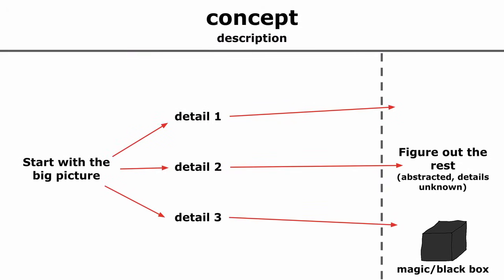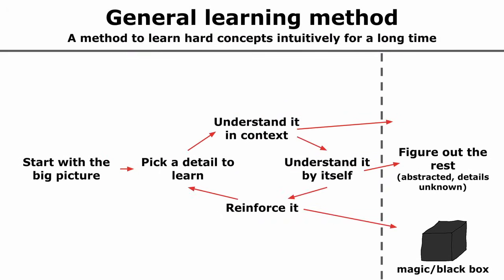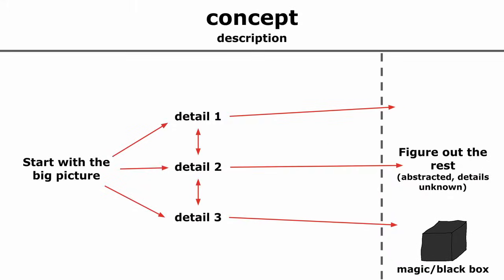To learn a specific detail, there are three steps. Understand the detail in context, understand it by itself, and reinforce it. So the first step is understanding the detail in context. As you expand on detail, make sure you understand at every step how the pieces fit together. So, ready for that pun? Here it is. You have to think outside the box.